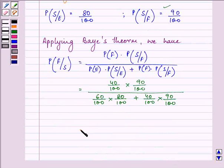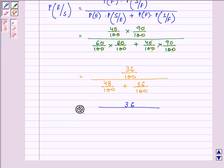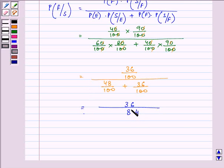Further on simplifying it, we have 36 upon 100 divided by 48 upon 100 plus 36 upon 100, which can be further simplified. We have it as the answer on the division comes out to be 0.43 approximately.